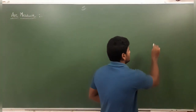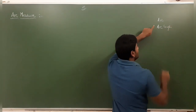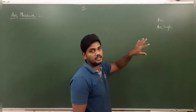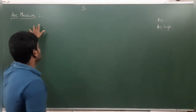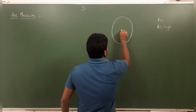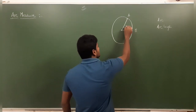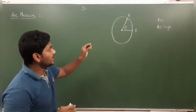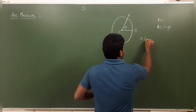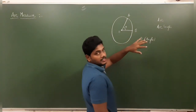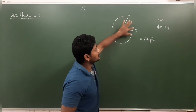Arc measure is different from arc length. Arc is a segment of a circle; arc length is the length of that arc. Arc measure is the angle — for example, if OA and OB are radii, the angle between them (θ, α, or β) is the arc measure. Arc length is the circumference of that arc portion.